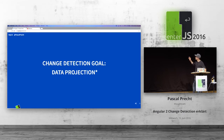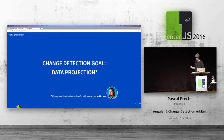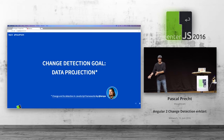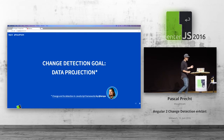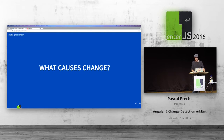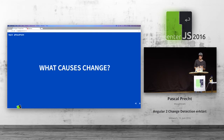If you want to read more on that topic in general, I recommend this article by Tero, called 'Change and its Detection in JavaScript Frameworks.' It gives an overview of how React does it with virtual DOM, how AngularJS does it with dirty checking, and so on. Now that we know what the goal is — reflecting changes in the UI — we first need to ask ourselves: what actually causes change? It turns out there are three different things.